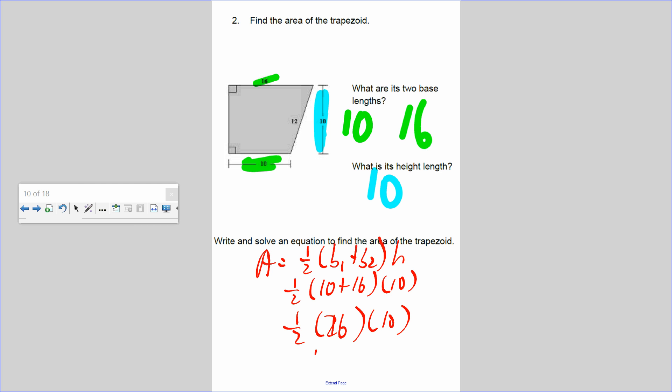What's half of 26? 13. 13 times 10 is 130 square units. That's the area of this trapezoid. So again, you add up the two bases. That's why I got 10 plus 16. Half of that number, 13, then you multiply by its height.